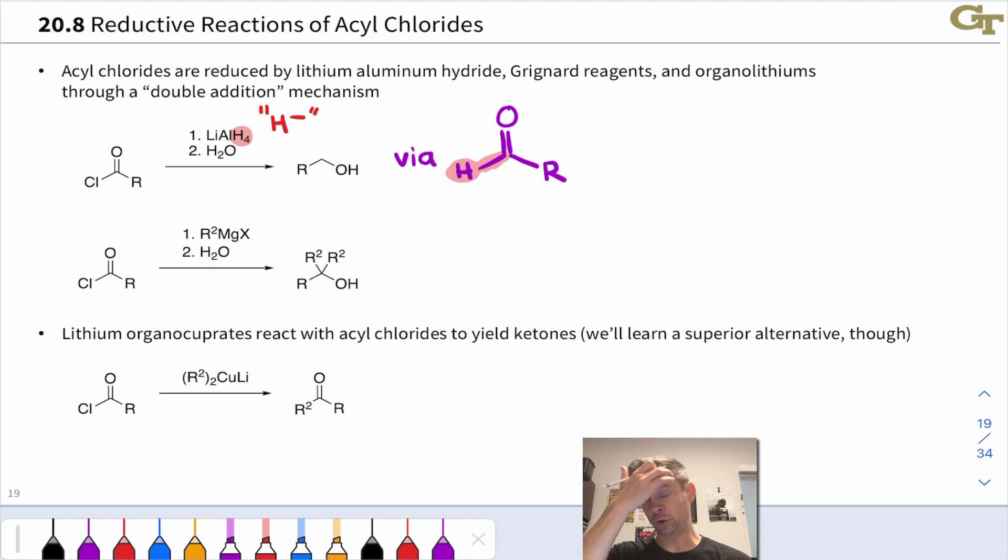If we hit an acyl chloride with a Grignard reagent, something similar occurs, but our nucleophile is now not H- but R- quote-unquote. The R-group linked to MgX in the Grignard reagent is nucleophilic, and this occurs via a ketone intermediate. So R2- quote-unquote substitutes for Cl-, this generates this ketone intermediate.